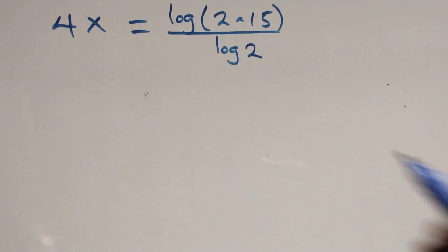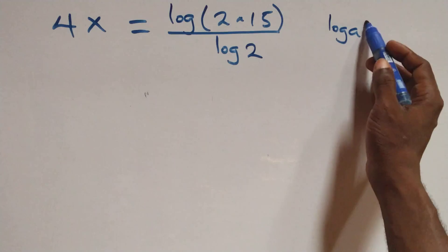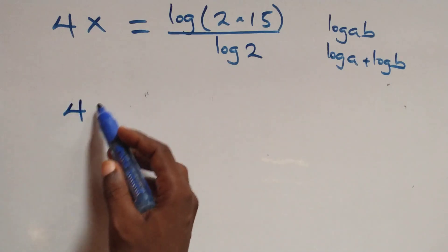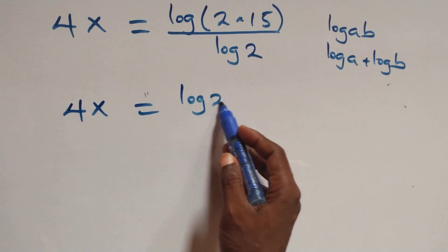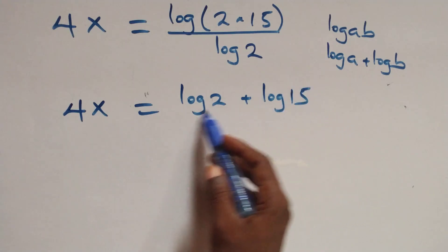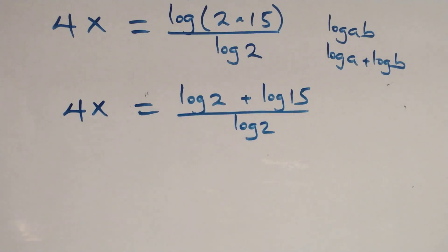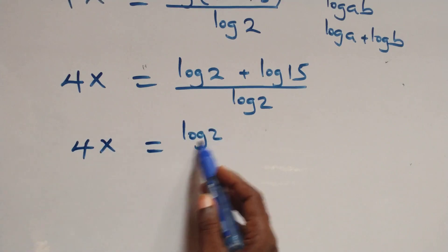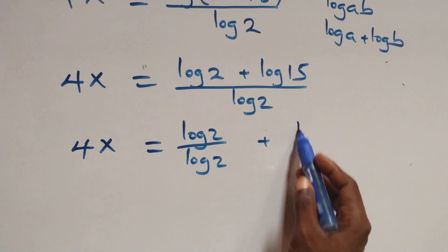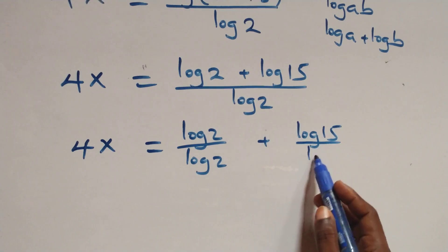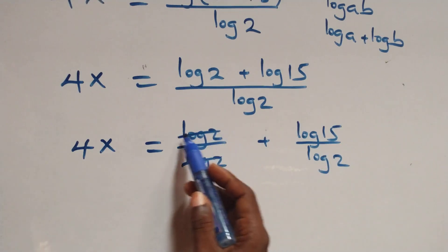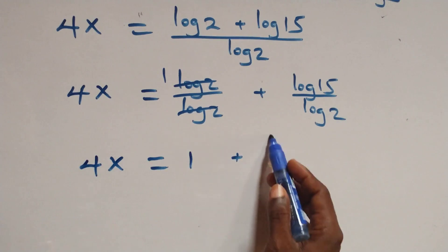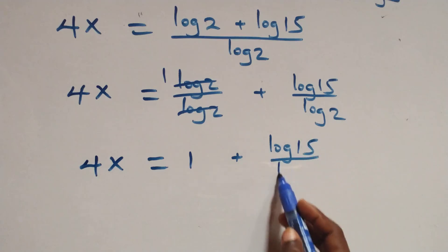Next step, this follows the log product rule. When we have log of a times b, this is the same thing as log a plus log b. Applying this here, we have 4x equals to log 2 plus log 15 over log 2. We separate this into two fractions: 4x equals to log 2 over log 2, and log 2 cancels each other, leaving 1, which implies 4x equals to 1 plus log 15 over log 2.